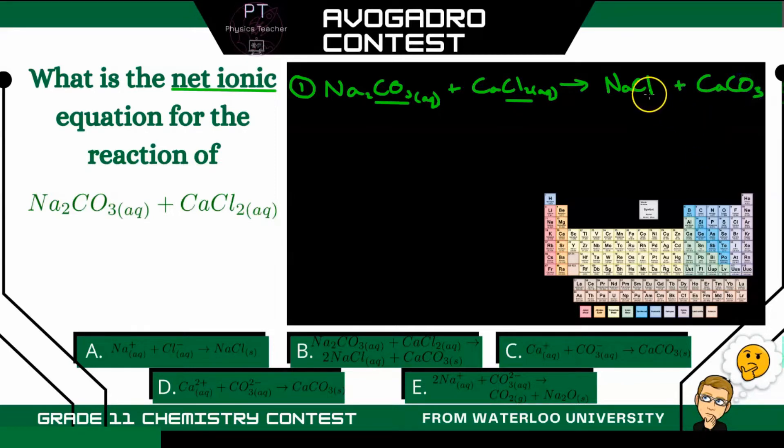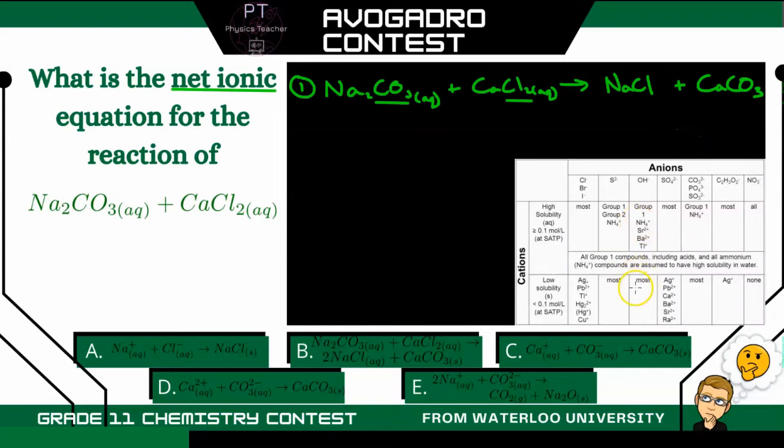Now the question becomes, are these aqueous solutions or have they formed a precipitate? So to figure that out, we have to look at our solubility table. All right, so here's our solubility table. Now first, if we look at sodium chloride, here's our chlorine anion, and it is highly soluble with most cations. It's low soluble with these ones, but notice we don't see sodium anywhere over here. So because it has a high solubility, it will easily dissolve in water, and it will remain an aqueous solution.